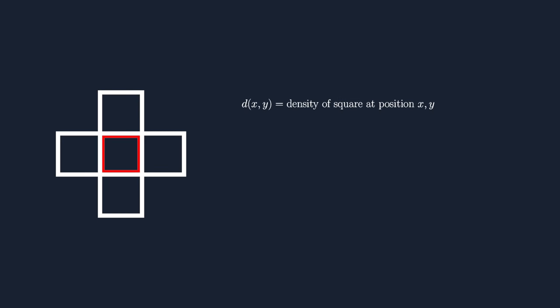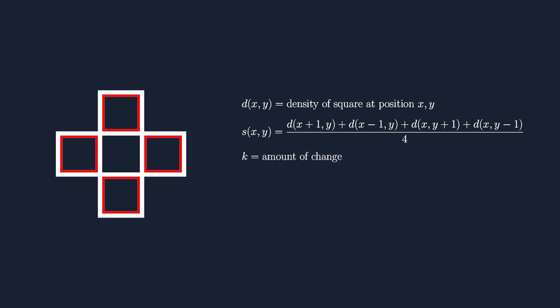To see how this is done, let's let d equal the density of the square, and s equal the average of the densities of the surrounding squares, and k equal the amount by which we are changing the value. This amount will vary due to factors such as the time step and the viscosity of the fluid.